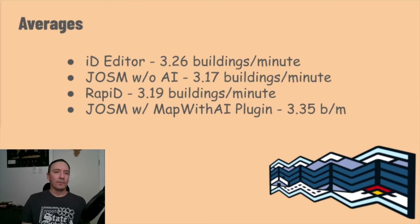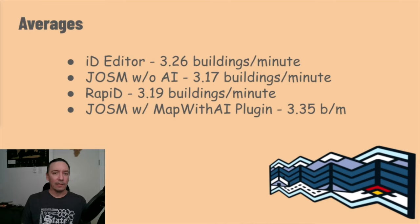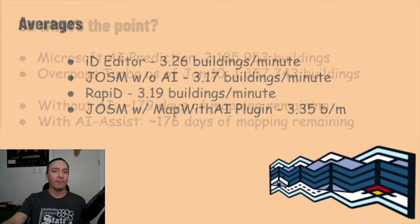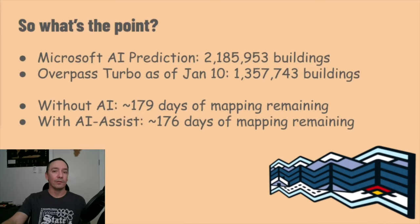Looking at the average for urban and rural mapping together, it's quite a mixed bag. It's crucial to note that these results are quite anecdotal and would vary based on individual mapping styles and proficiency with the tools. I wouldn't consider myself an expert user of any of these methods, but I'm familiar enough to use them all with basic shortcuts and hotkeys. Also, the luck of the draw when getting random tasks that might have very little to no mapping needed.